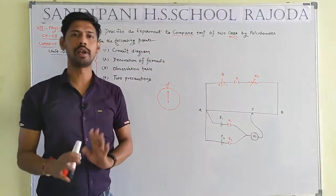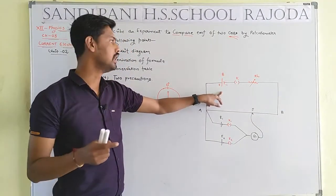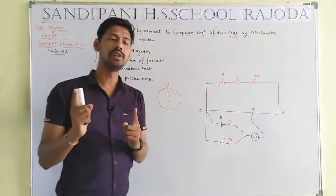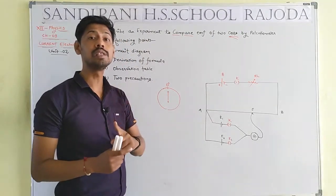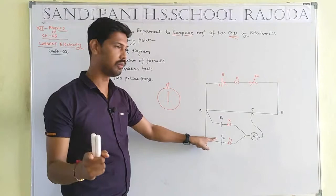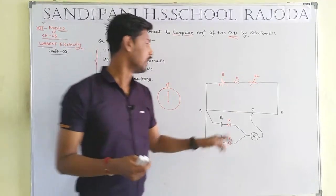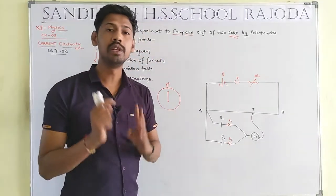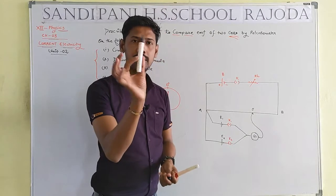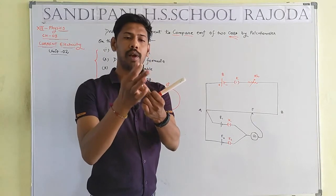Let me consider the circuit diagram. AB is the potentiometer wire; the lead accumulator (V), key K (one-way key), and RH (resistance) form the main circuit. E1 and E2 are the experimental cells with EMF E1 and E2 respectively, directly connected with keys K1 and K2 (two-way keys), directly connected with galvanometer G, which connects with the jockey J. The jockey has a plastic/non-metal upper cover and a copper wire tip.